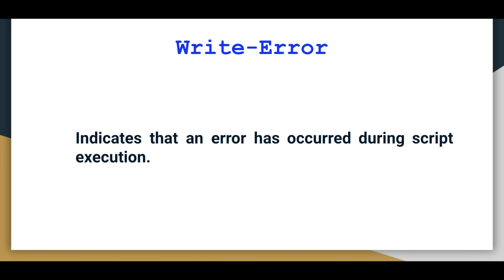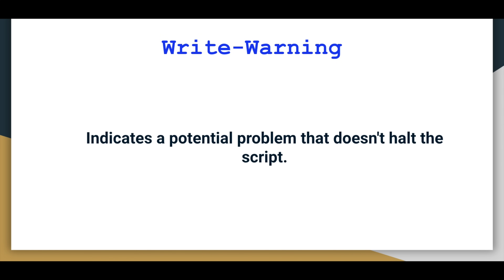The next one is Write-Warning. When you're processing something, the result may not be a big stoppage problem but it's a potential problem. Without stopping the whole execution of the script, you can give a warning like 'consider fixing it later', or when doing a comparison, 'this is close but not correct'. Instead of Write-Host, if you use Write-Warning it gives you a different color — yellow — which shows it's a warning.